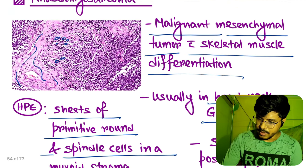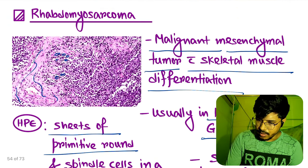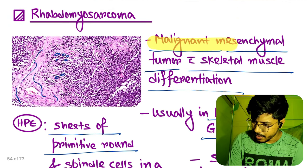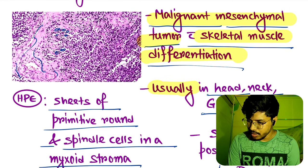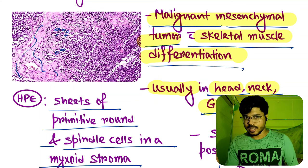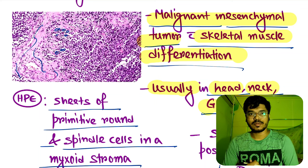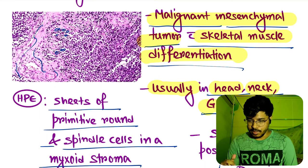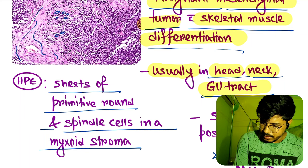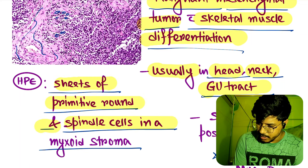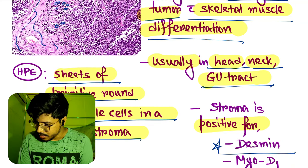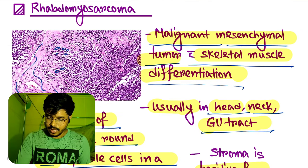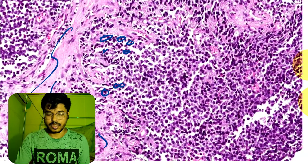Now let's quickly revise. Rhabdomyosarcoma is a malignant mesenchymal tumor with skeletal muscle differentiation, usually located in head, neck, and genitourinary tract. Cardiac rhabdomyosarcoma is seen in tuberous sclerosis. Histopathology shows seeds of primitive round and spindle cells in a myxoid stroma, and the markers are desmin and MyoD1. And this is the histopathology picture.